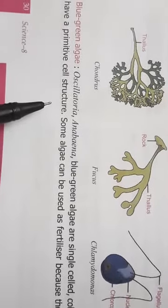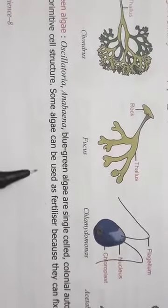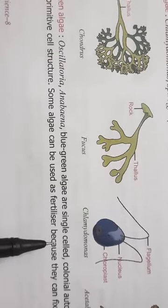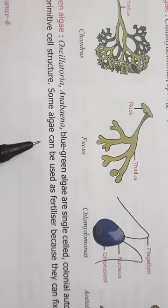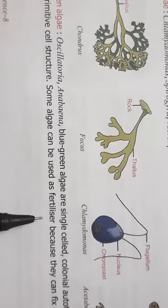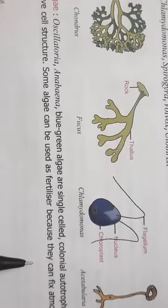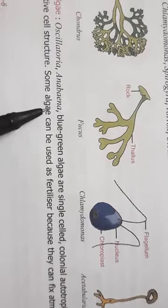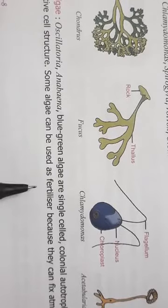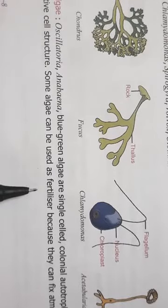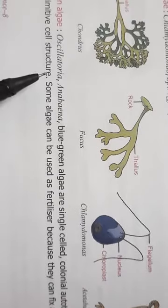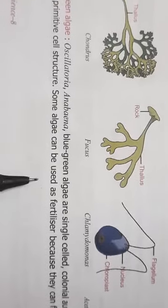The blue-green algae are Oscillatoria, Anabaena. All these are single celled autotrophs - that means unicellular. And these algae can be used as fertilizers. Why? Because they can fix the atmospheric nitrogen. These blue-green algae are very helpful in the crop growth. They can hold the water very well, so these blue-green algae are very useful as fertilizers and they help in the growth of the crops.